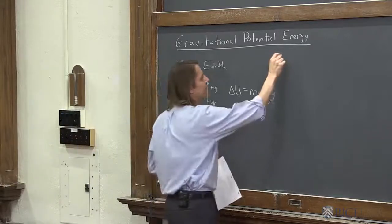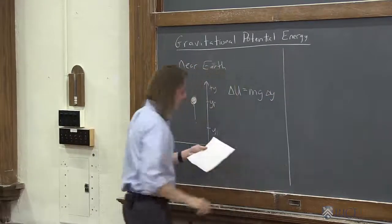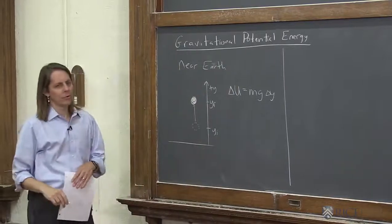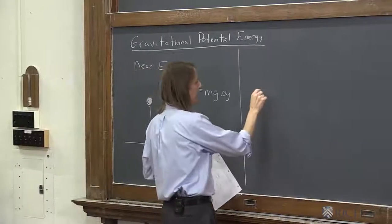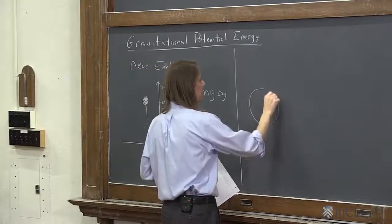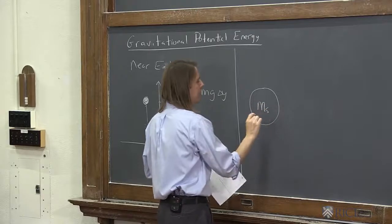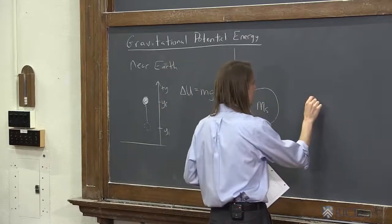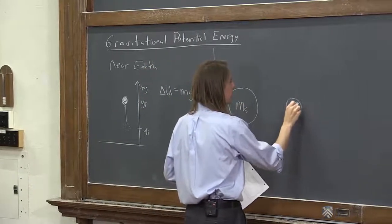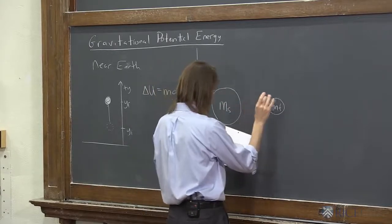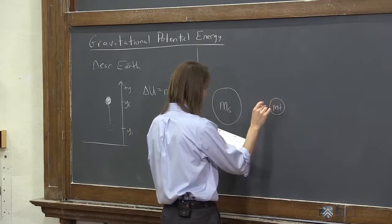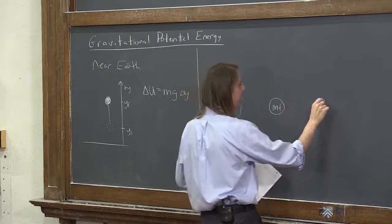Now we're going to do that for our formula for universal gravitational potential. We're going to think in terms of the source mass and the test mass again. We'll say this one stays still, the test mass starts here, and then we're going to move it out to here.